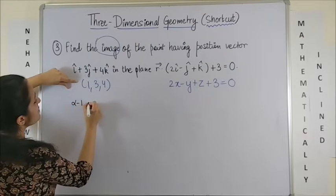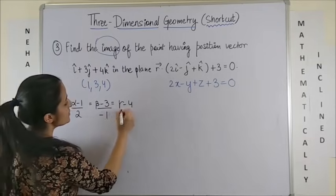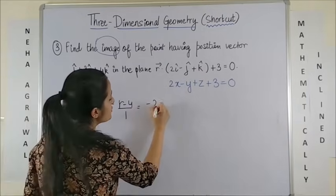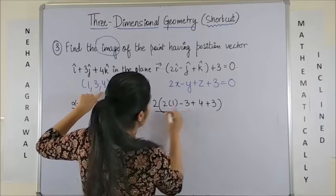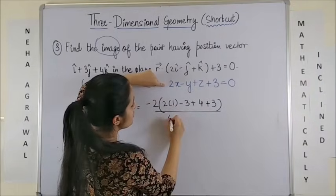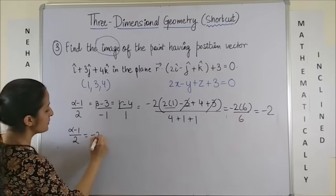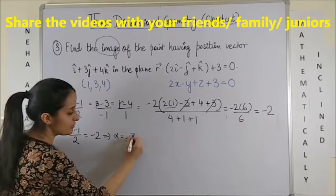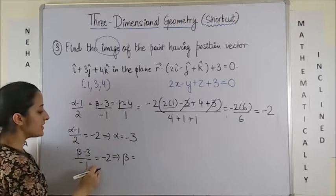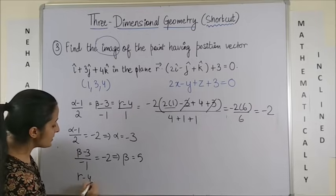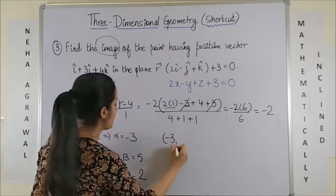So: alpha minus 1 over 2 equals beta minus 3 over minus 1 equals gamma minus 4 over 1 equals minus 2 times (2 times 1 minus 3 plus 4 plus 3) over the square of the coefficients: 4 plus 1 plus 1. This gives us the answer minus 2. Equating: alpha minus 1 over 2 equals minus 2 gives alpha equals minus 4 plus 1, so minus 3. Beta minus 3 over minus 1 equals minus 2 gives beta equals 2 plus 3, that's 5. And gamma minus 4 over 1 equals minus 2 gives gamma equals minus 2 plus 4, that's 2. So the image is (minus 3, 5, 2).